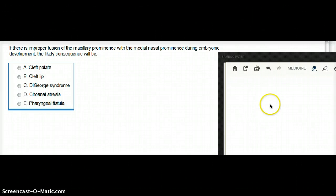This question says, if there is improper fusion of the maxillary prominences with the medial nasal prominences. Imagine that these are the nasal prominences, and these are the maxillary prominences.